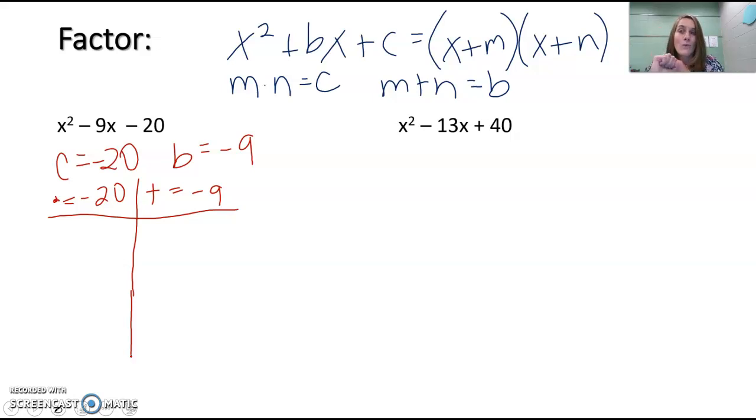You might notice that 1 and 20 probably won't work; it's probably either 2 and 10 or 5 and 4. You might say 5 and 4 makes sense because that could give us 9, but remember it has to be -20, so it would be -5 and 4, or 5 and -4. If you add those together, that's -1 and 1. That's not -9, so that doesn't work.